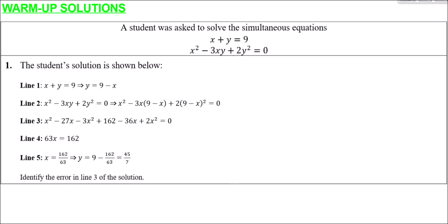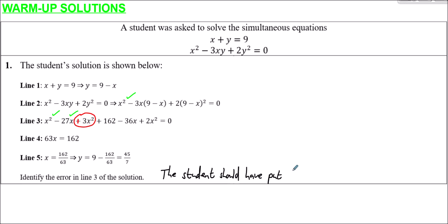Since the error is on line three, we can assume line two is correct. We have an x squared term, and expanding out the brackets, minus 3x times 9 would be minus 27x — that's what they've put. However, minus 3x multiplied by another minus x: a minus value multiplied by another minus value should give us a positive. So minus 3x times minus x gives positive 3x squared, not negative. The student should have written positive 3x squared, not minus 3x squared. It should be a plus, but it was a minus — an easy mistake to make.